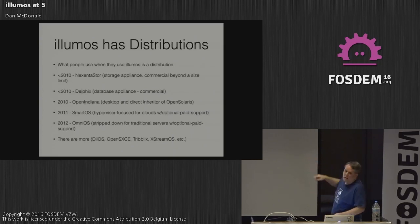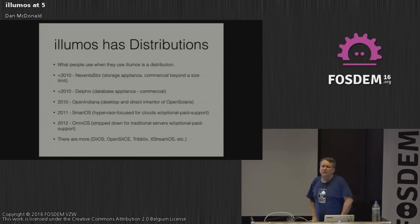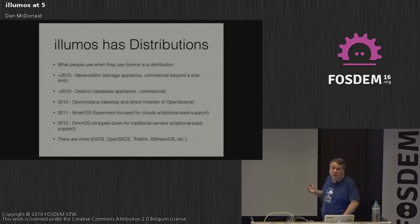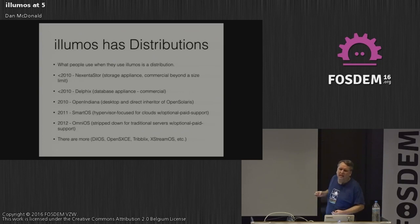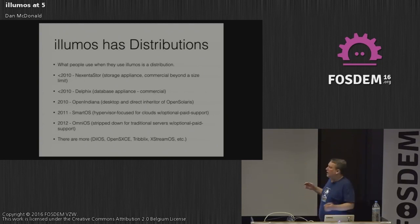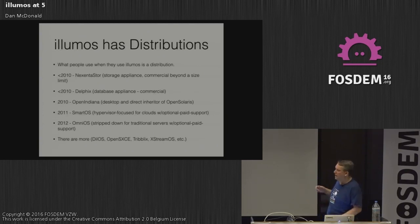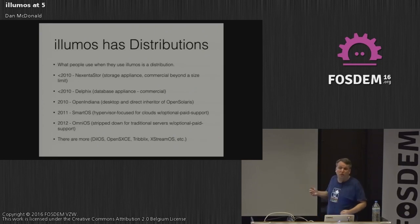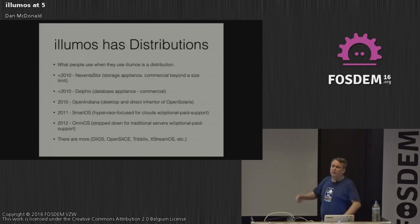When people use Illumos, they get a distro. In historical order: Nexenta originally started as a different desktop for OpenSolaris in 2008, then pivoted to become a storage appliance, which they are still doing successfully today — it's commercial beyond a certain size limit. Delphix was some ex-Oracle database people who were using ZFS to help manage Oracle databases more smoothly, starting on OpenSolaris and then Illumos. The ZFS leadership — Matt Ahrens, George Wilson — all work for Delphix now.